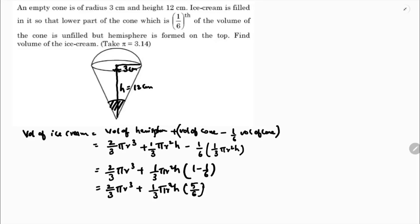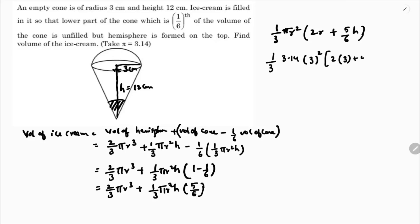Now take (1/3)πr² common. In the first term you're left with 2r, and in the second term (5/6)h. Substituting values: (1/3) × 3.14 × 3² × (2 × 3 + (5/6) × 12). That gives (1/3) × 3.14 × 9 × (6 + 10).